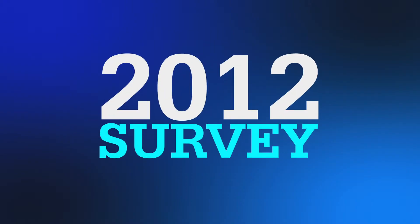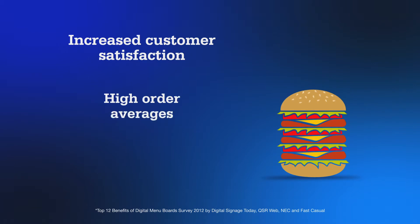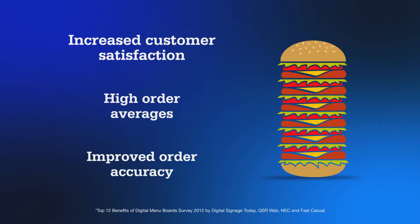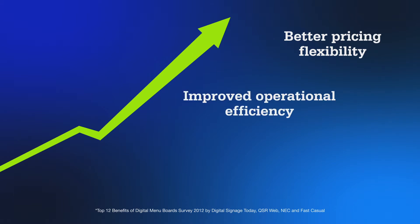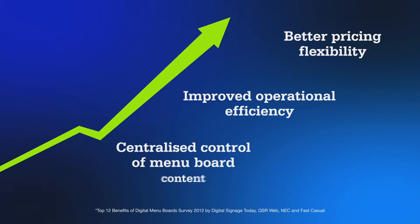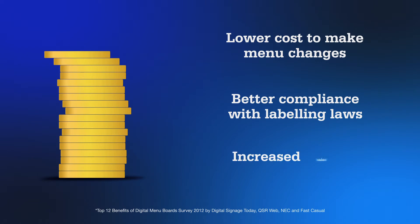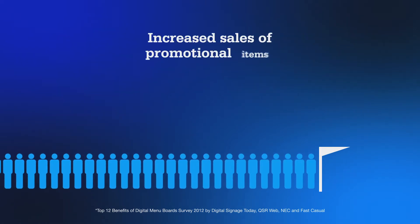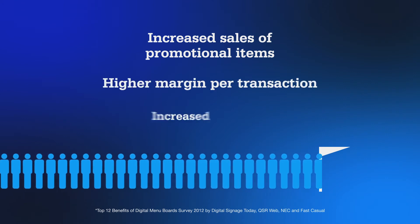A 2012 survey found the top benefits of digital menu boards were increased customer satisfaction, higher order averages and improved order accuracy, better pricing flexibility, improved operational efficiency and centralised control of menu board content, lower cost to make menu changes, better compliance with labelling laws and increased sales of higher margin items, increased sales of promotional items, higher margin per transaction and increased footfall.